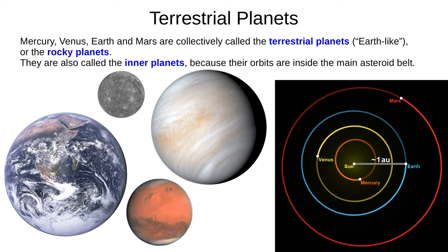Mercury, Venus, Earth, and Mars are called terrestrial planets, which means Earth-like. They are also called rocky planets, or inner planets, because they orbit inside the main asteroid belt.